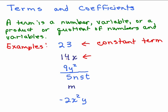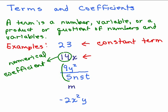14x is made up of the number 14. We're going to call 14 the numerical coefficient. So if you have a number associated with some variables, the number that's being multiplied is called the numerical coefficient. Now, we usually just use the word coefficient. Let's look at the next one. Notice you've got 9y² over 5n²st. 9 fifths is the numerical coefficient here.